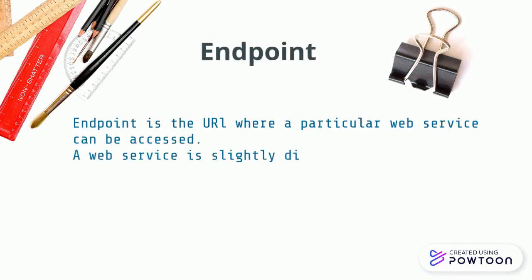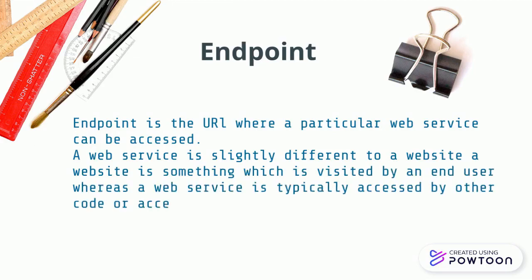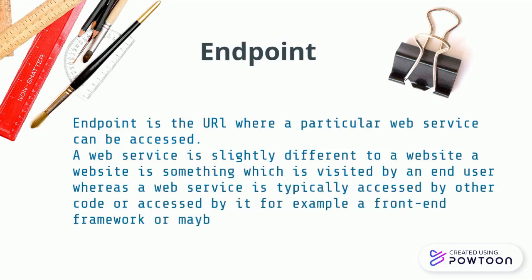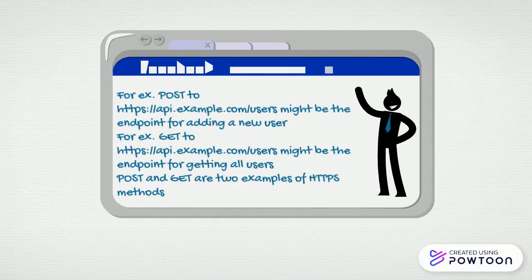A web service is slightly different to a website because a website is something which is visited by an end user, whereas a web service is typically accessed by other code, or accessed by a front-end framework, or maybe a back-end framework. For example, POST to api.example.com/users might be the endpoint for adding a new user, while GET to the same URL might be the endpoint for getting all the users. POST and GET are two examples of HTTP methods.